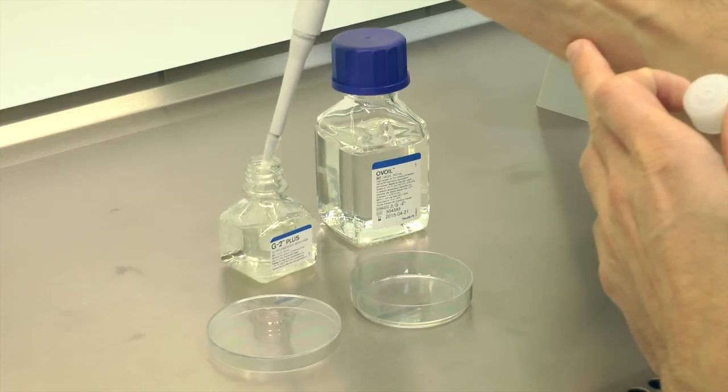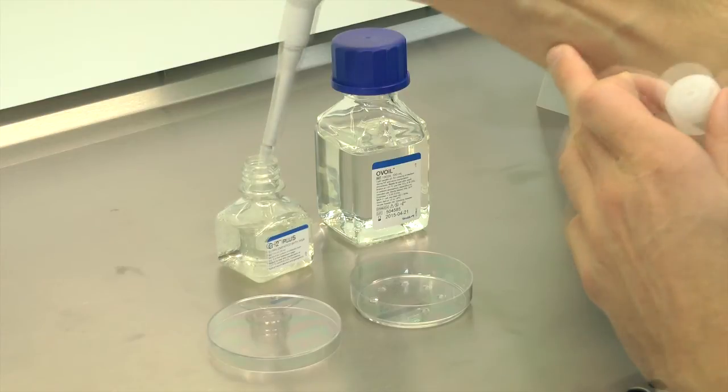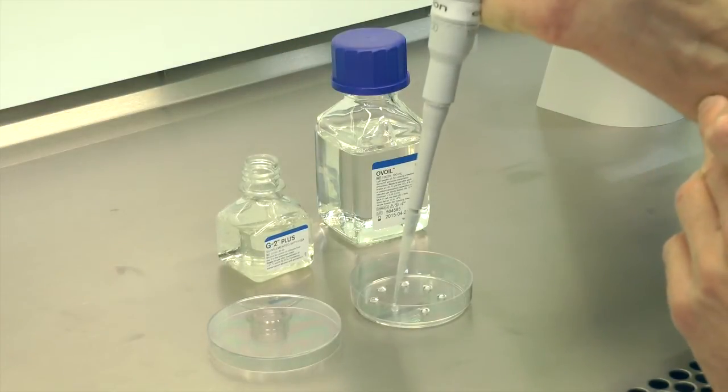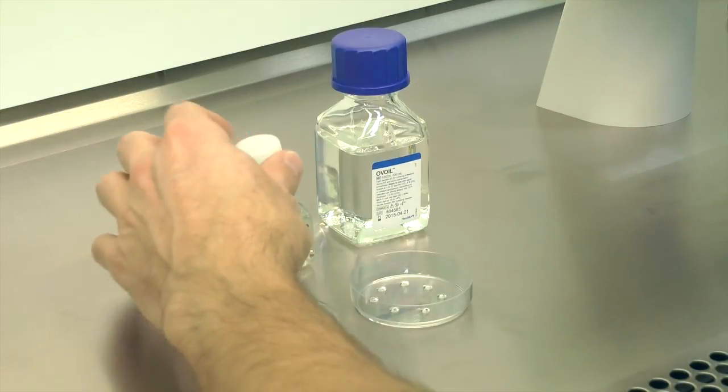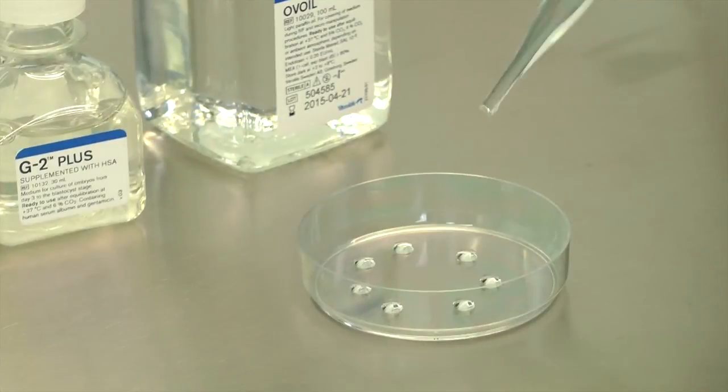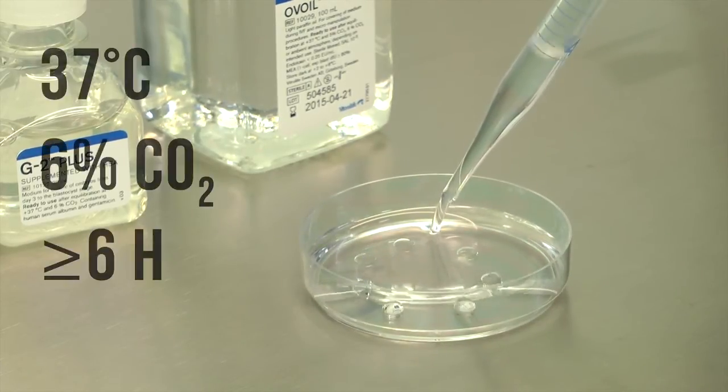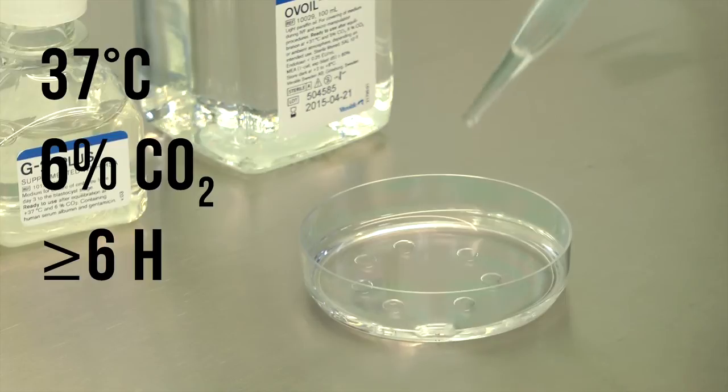If you do blastocyst culture, prepare culture dishes with micro droplets on the morning of day 3 using G2 Plus. Cover these droplets with oil and equilibrate it at 37 degrees Celsius and 6% CO2 for at least 6 hours.